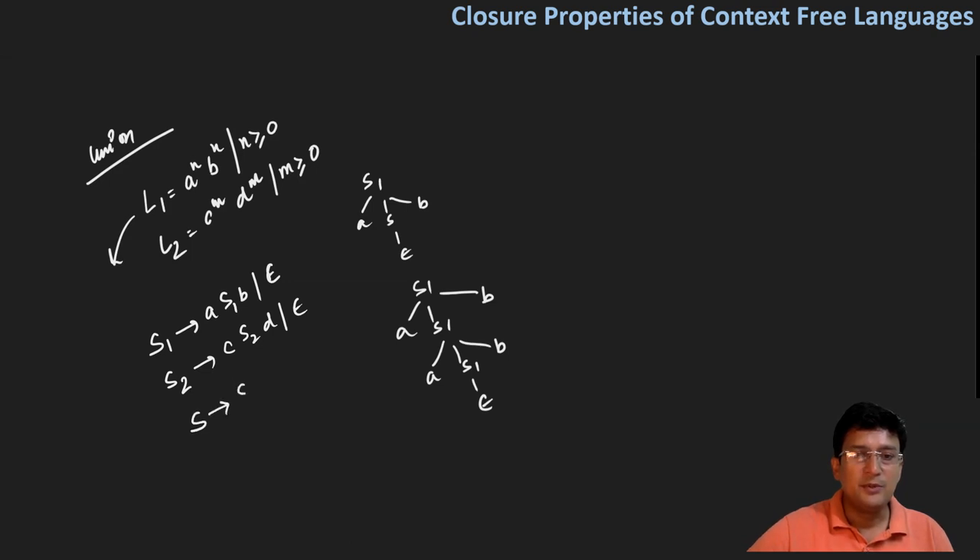If we want to take their union, we can say that S produces S1 or S2, and then S1 produces A S1 B and epsilon, and S2 produces C S2 D and epsilon. This is our combined grammar. With this combined grammar, you can say that either S1 will be produced or S2 will be produced. If S1 is produced, we will go this way. If S2 is produced, we will go that way. What this means is that for this, the grammar we have made is a context-free grammar. Therefore, the language generated from it will also be context-free, and a PDA will exist for it.